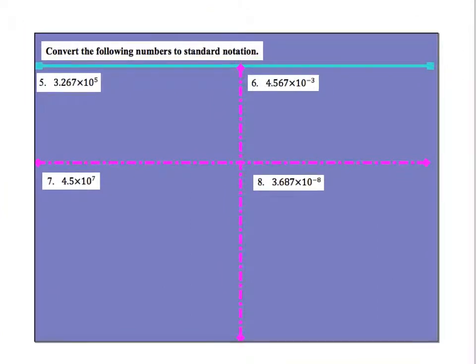So going the other way with this, when I see that this is 3.267 times 10 to the 5, all I'm going to do is move the decimal place 1, 2, 3, but then I'm going to keep adding zeros until I get out there. So that's 4, that's 5. So now my number becomes 326,700.